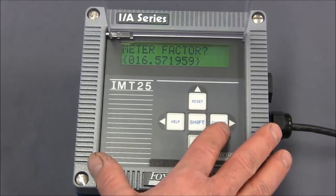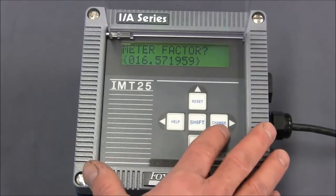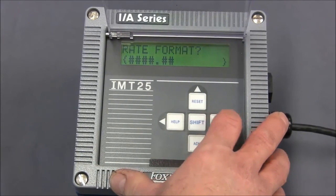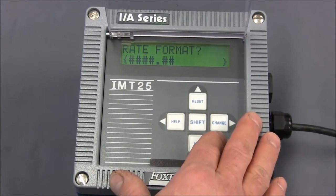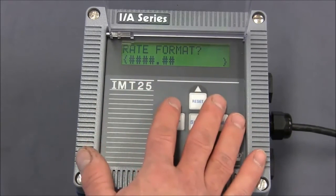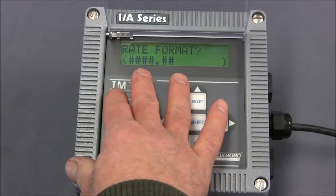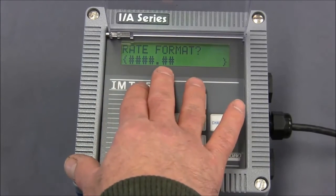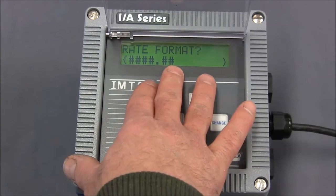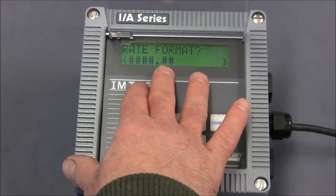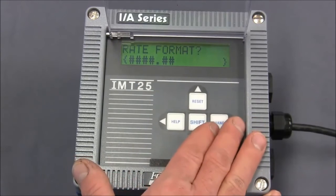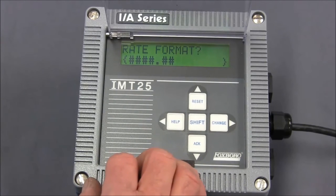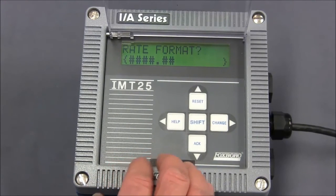Sometimes you'll find the last couple of digits may change slightly. This will have no impact on the measurement. We'll go to the right. Here we have the rate format. Here you can determine when you're looking at the flow rate on the measurement screen how many fractions of a gallon you see. In this instance we can see tenths and one hundredths of a gallon. Many times on larger flow tubes people really don't care about seeing fractions of gallons and many times prefer to see just whole gallons. For this exercise we'll look at one decimal point to the right.